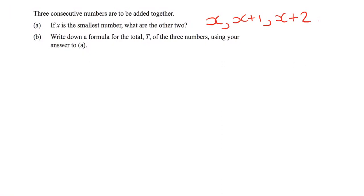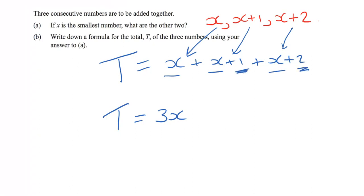B. Write down a formula for the total T of all three numbers using your answer to part A. So we're told that the total is T. So we're going to start off by writing T equals. And of course, this question is implying that we have to add up these numbers. So if we know what these three numbers are, we've got to add up an X plus an X plus 1 plus an X plus 2. We are taking these three numbers and we're just going to add them up. But of course, we can simplify. Now, we have three X's there, X plus X plus X. So that's worth 3X. We also have a 1 and a 2. Well, that makes a 3. So our final formula is T equals 3X plus 3.